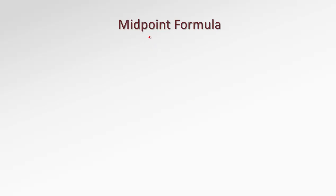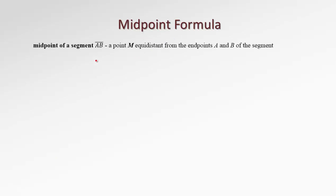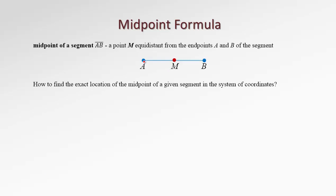In this lesson we'll try to develop the midpoint formula. A midpoint of a segment AB is a point M that is equidistant from the endpoints A and B of the segment. For a segment AB, a midpoint M is a point that is positioned exactly at the middle of the segment, so the distance AM is exactly the same as the distance MB.